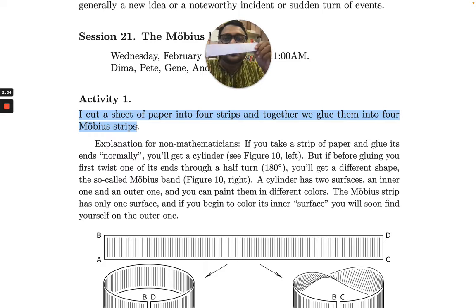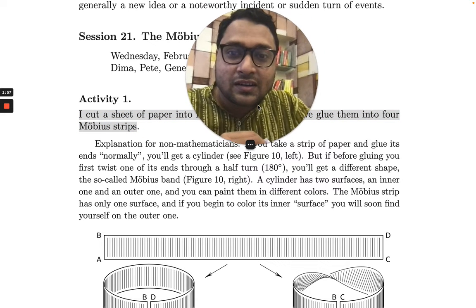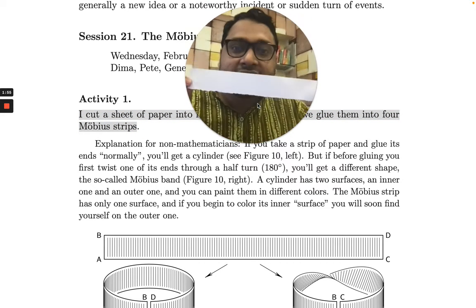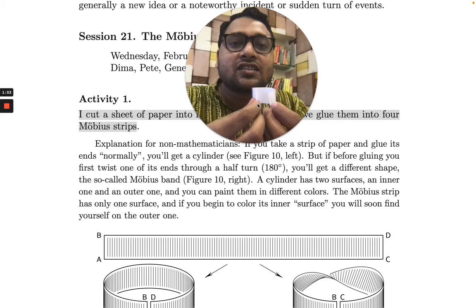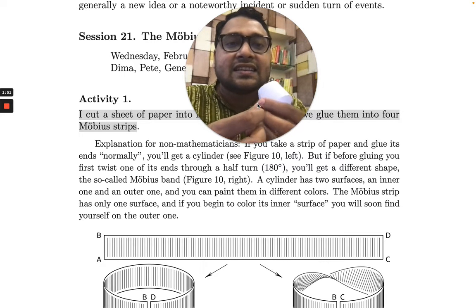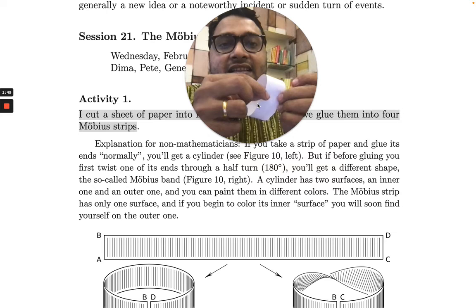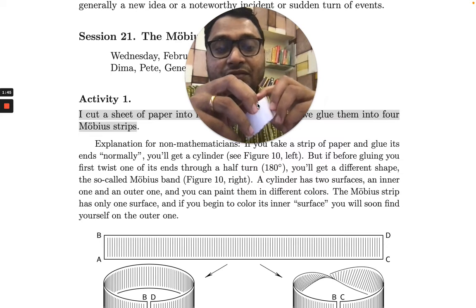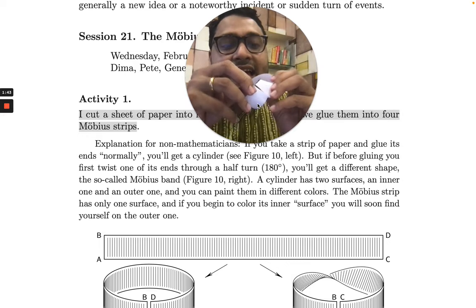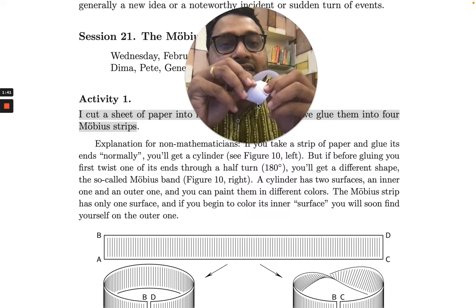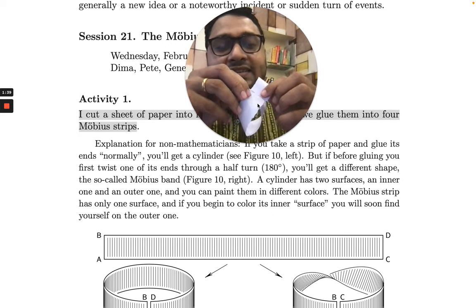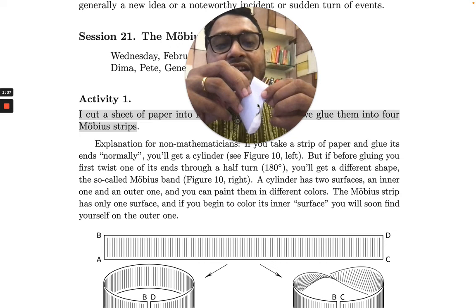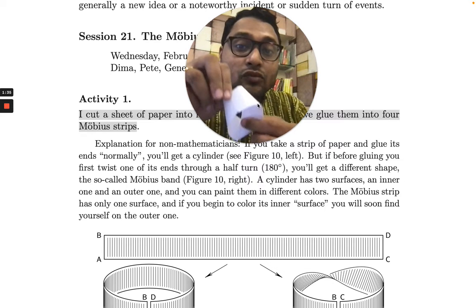So this is a piece of paper I have here. Maybe you can see it. You have a piece of paper like this, and if you just paste it like this, the two ends, then it becomes a circular cylindrical kind of stuff. But if you turn this and paste it, if you twist it once and paste it, what you get is a very beautiful surface called the Mobius strip.